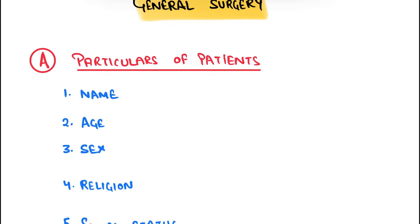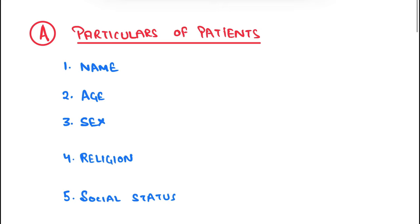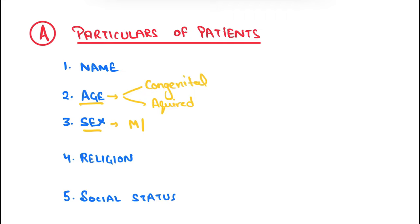Starting with the name — it is very important to know the patient by name. Then age: age is important because there are many diseases which are congenital and some are acquired, so we can classify diseases accordingly. Another particular is sex — whether the patient is male or female.